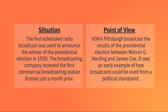The first scheduled radio broadcast was used to announce the winner of the presidential election in 1920. The broadcasting company received the first commercial broadcasting station license just a month prior. KDKA Pittsburgh broadcast the results of the presidential election between Warren G. Harding and James Cox. It was an early example of how broadcasting could be used from a political standpoint.